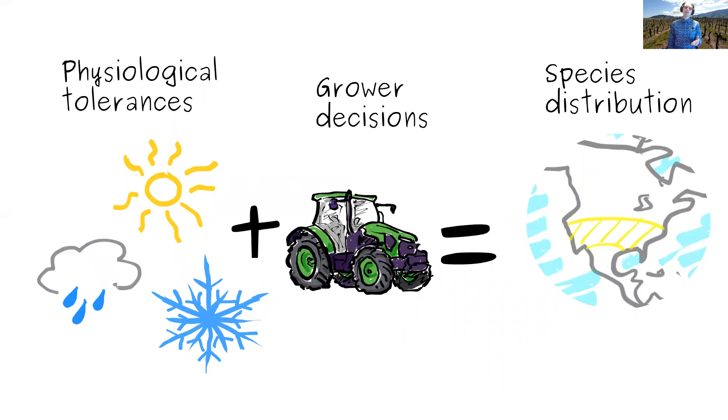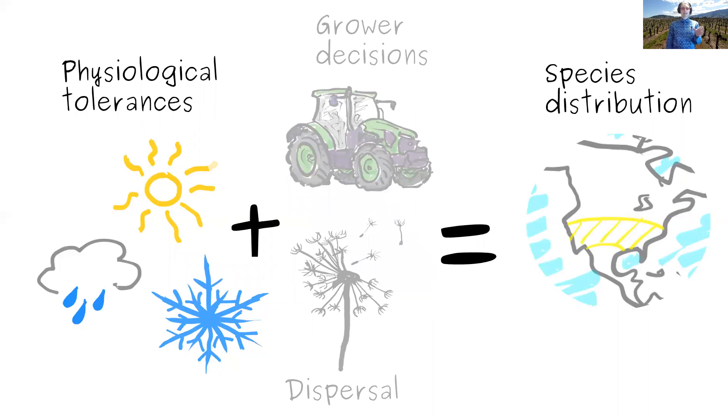And we can do this because the physiological tolerances side of the equation remains the same, and it's the dispersal side which is replaced for crop species with grower decisions to dictate the current species distribution. So if we can understand the physiological tolerances for plants, we can then plug this into an equation for crops if we want to add grower decisions to figure out where we should be growing things, or we can plug it into an equation for wild species by combining it with dispersal abilities.